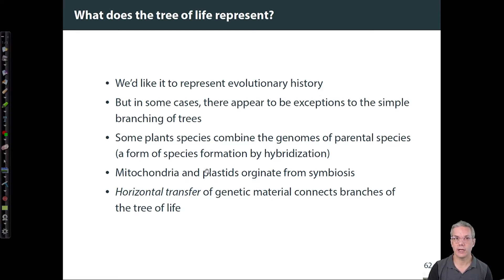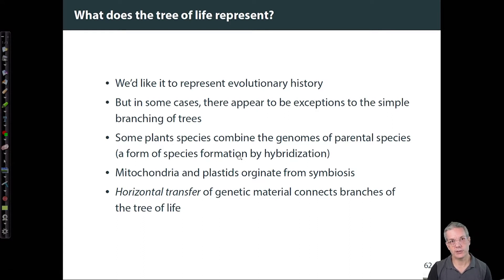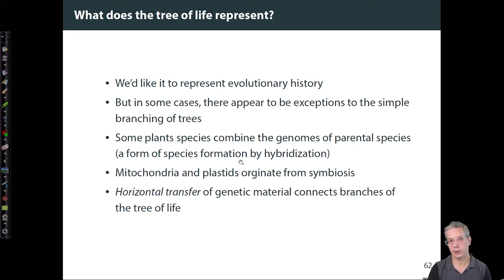Of course, early in eukaryotic history, mitochondria and plastids originated from symbiosis, which injected new genetic material into the organism. All of these are examples of horizontal gene transfer that introduces new genetic material that connects branches of the tree of life rather than passing from parent to offspring.